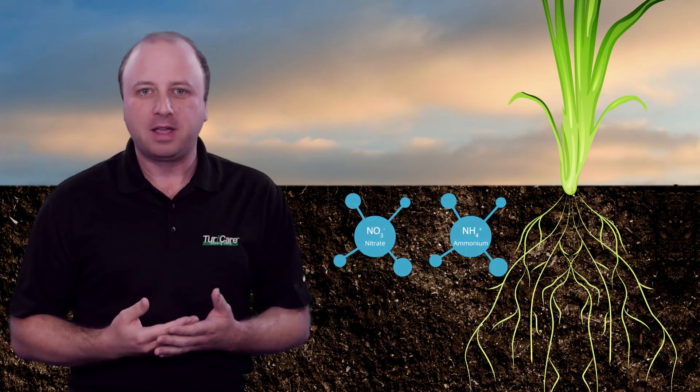In nature, soil bacteria fix nitrogen gas from the air and convert it into ammonium and or nitrate. These are the only two forms of nitrogen that plants can take up.